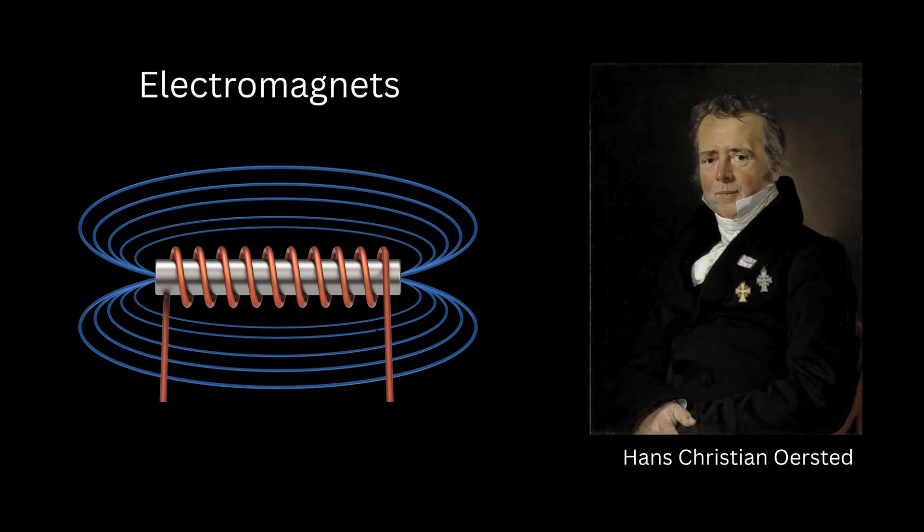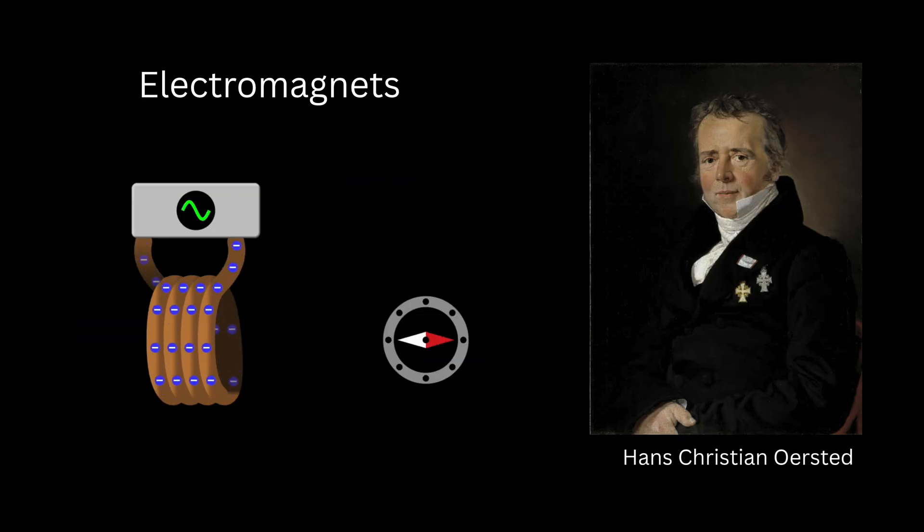This led to the invention of electromagnets—coils of wire that become magnets when current flows through them.